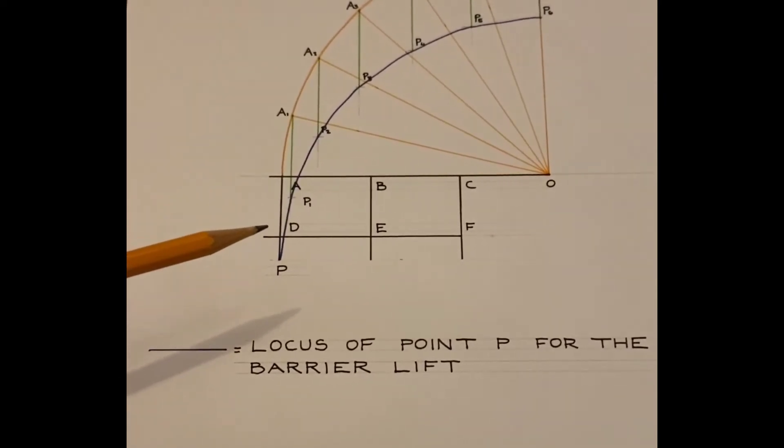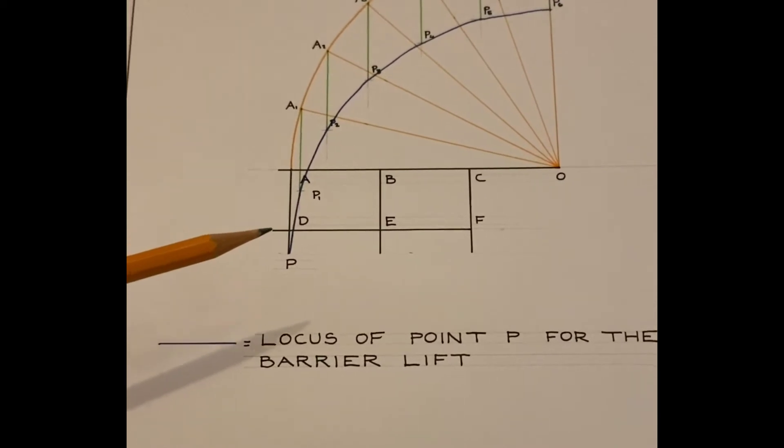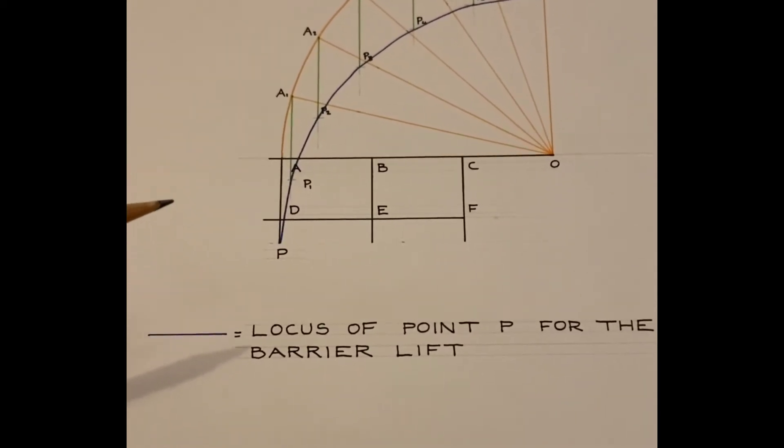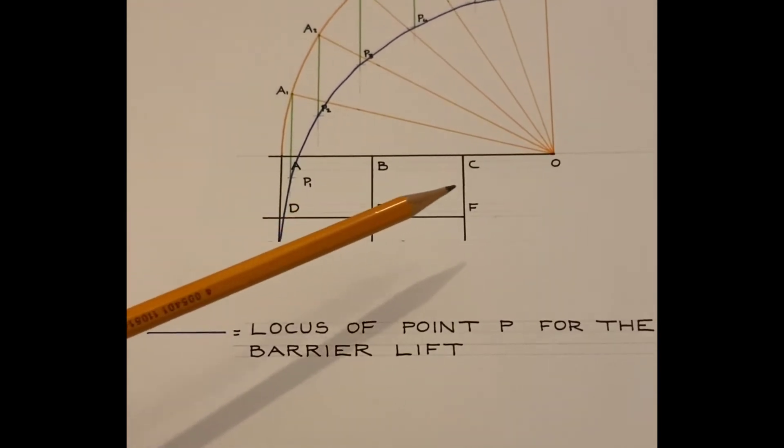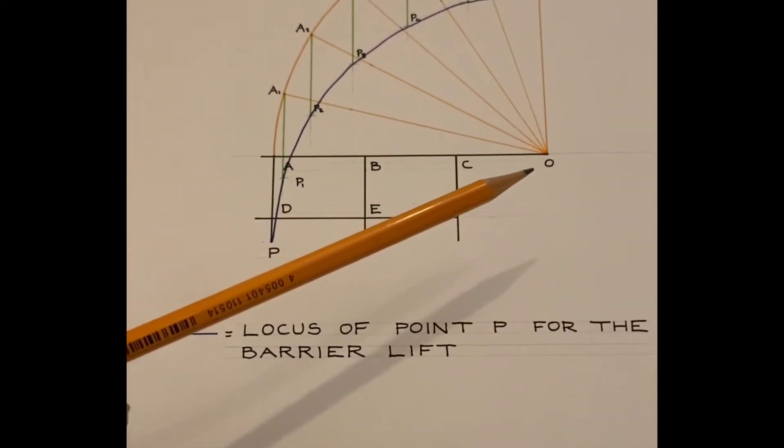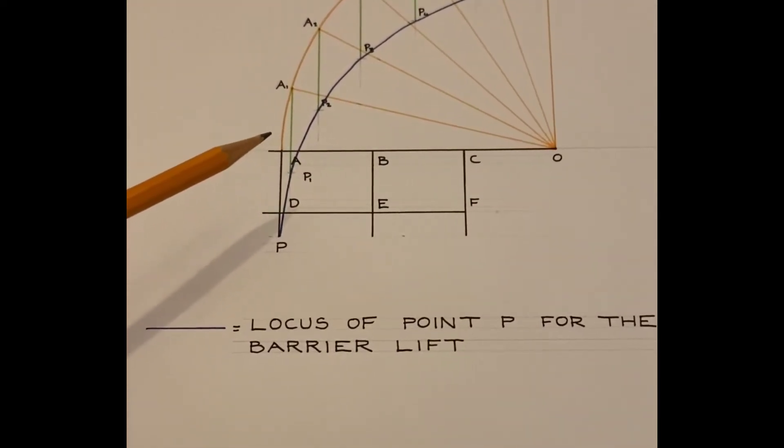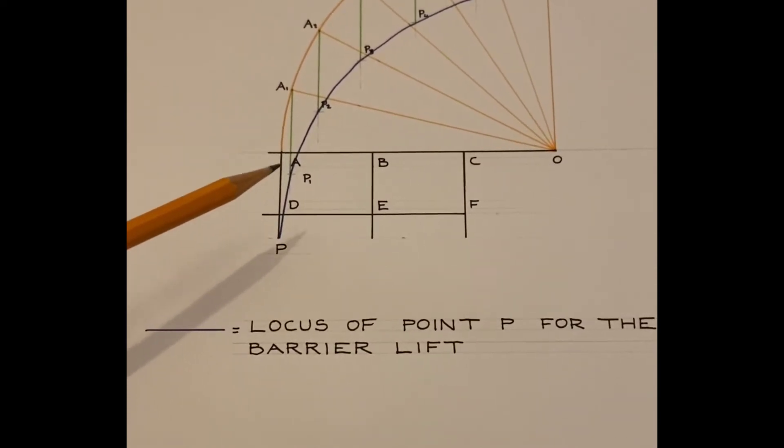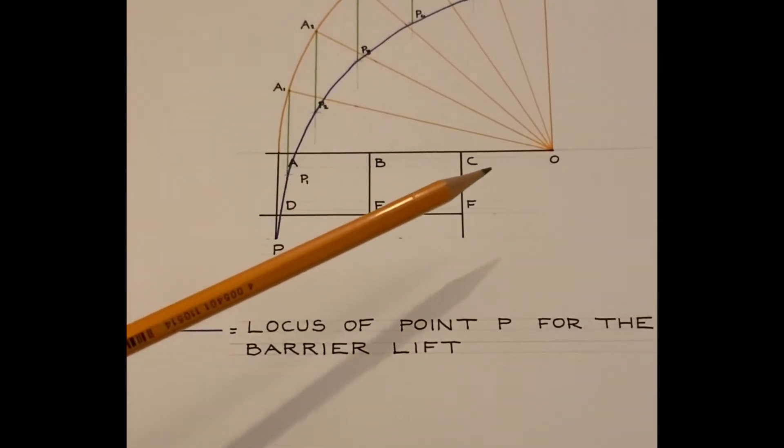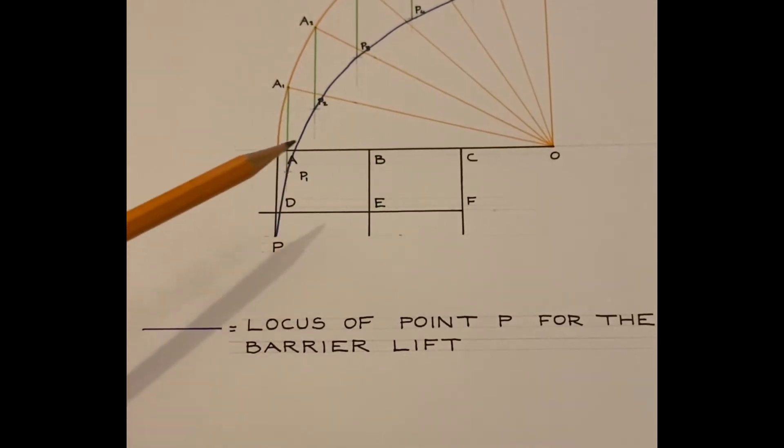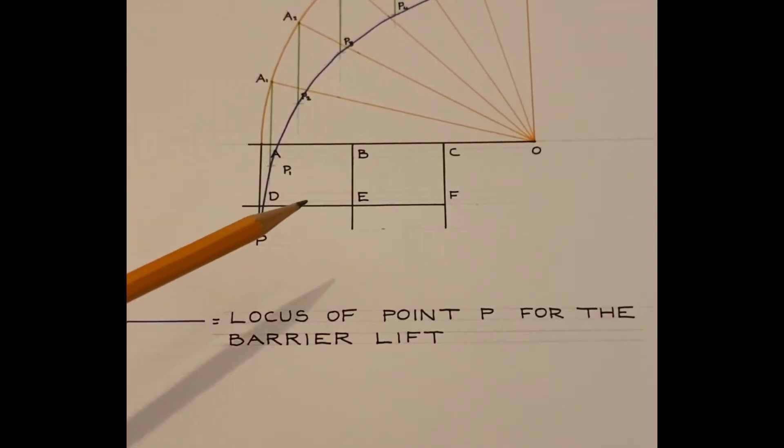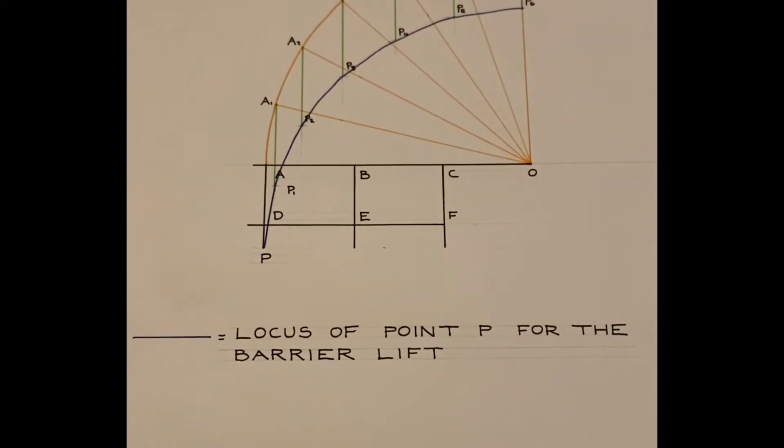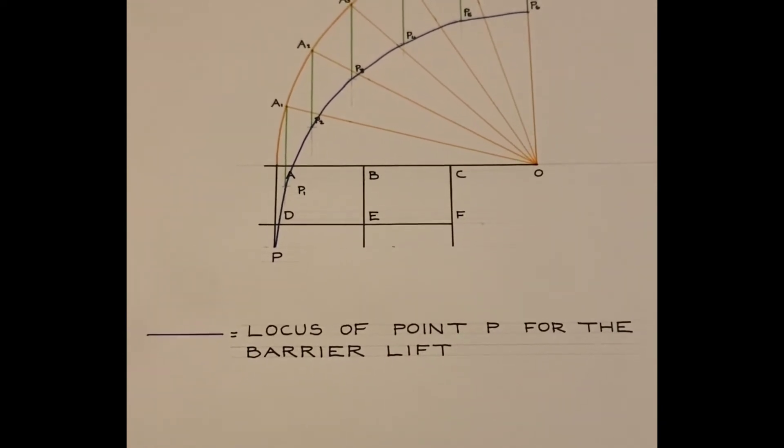When you initially look at the question and you see six individual points you could think to yourself that this is going to be a very complicated question but the only things that you have to concern yourselves with is the lifting of the barrier OA and following the point there P. So the only two lines that are of any relevance to us are OA and AP. We can forget about the rest. So that then completes the solution to the first part of the question.